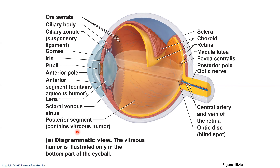The ciliary body, shown in yellow, is the second part of the vascular layer. It's a ring of tissue surrounding the lens — because this is just a cross-section, it actually forms a complete ring around the lens. The ciliary body contains smooth muscle bundles called ciliary muscles that control the shape of the lens.